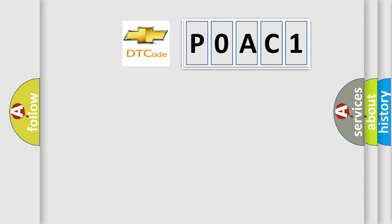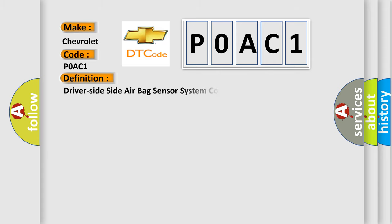So, what does the diagnostic trouble code P0AC1 interpret specifically for Chevrolet car manufacturers? The basic definition is driver side side airbag sensor system communication error. And now this is a short description of this DTC code.